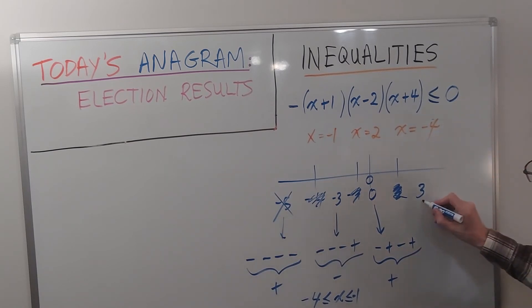So finally, if I do x equals 3, I get the negative at the front. That's positive, that's positive, and that's positive. So altogether, that gives me a negative. That's what I want. So x is greater than or equal to 2.